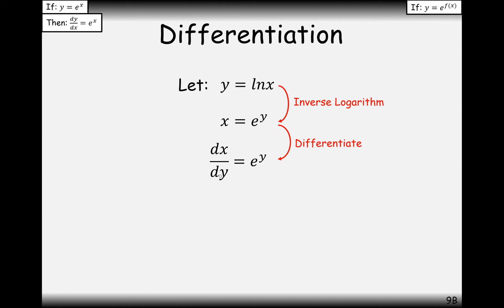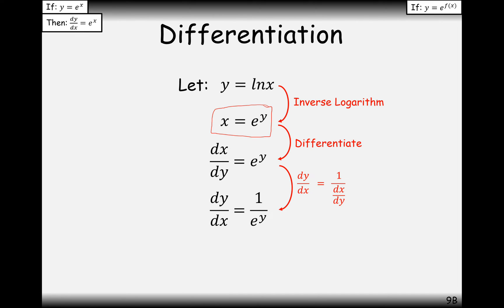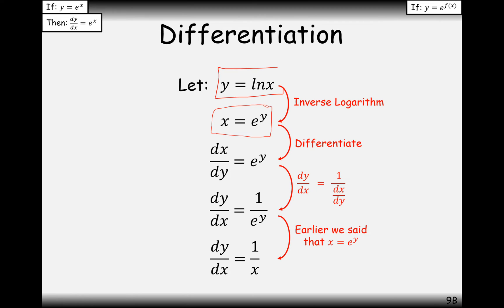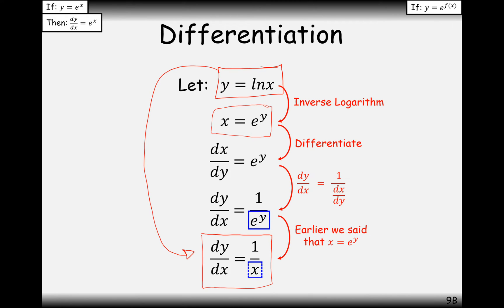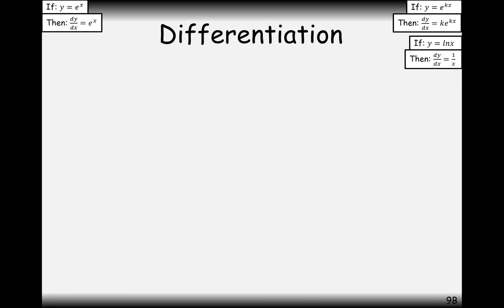We can treat dx by dy as a fraction and flip it. Rearranging gives dy by dx equals 1 over e to the y. Now, what was e to the y? Coming back up, e to the y is just x. So dy by dx equals 1 over x. The shortcut rule: if y equals ln x, the differential of ln x is 1 over x. That's something you can remember — the differential of ln is 1 over x.